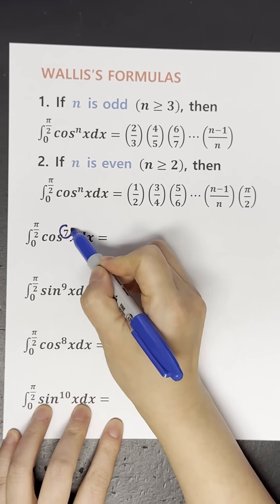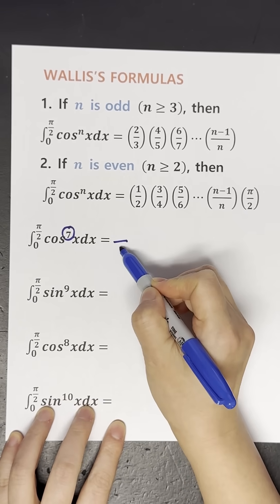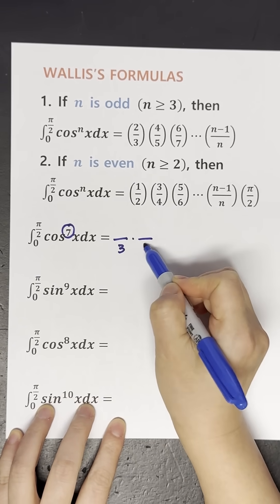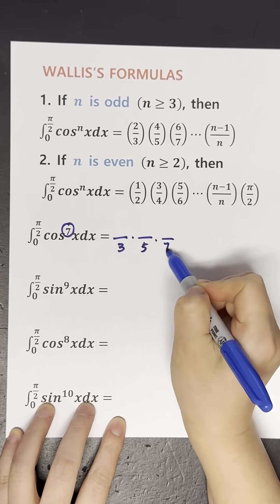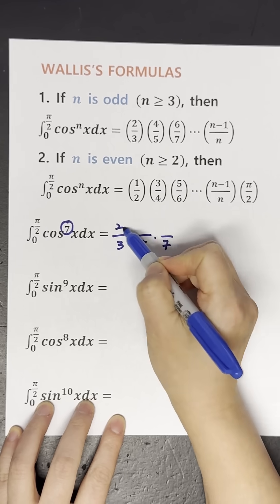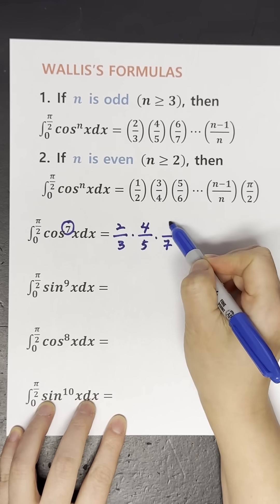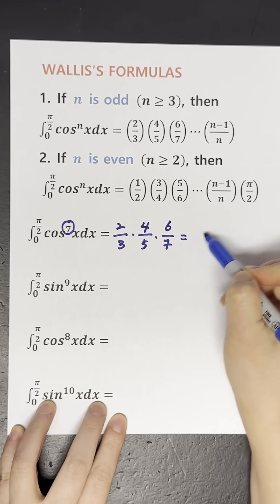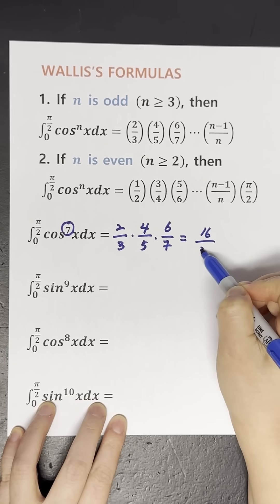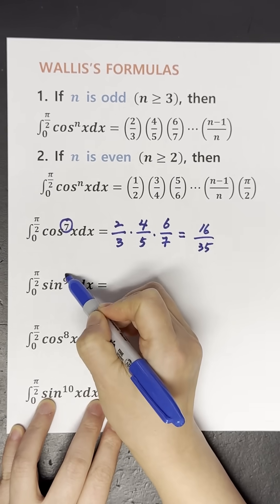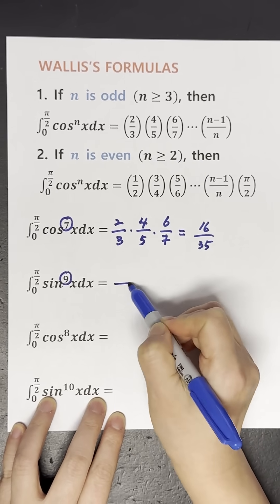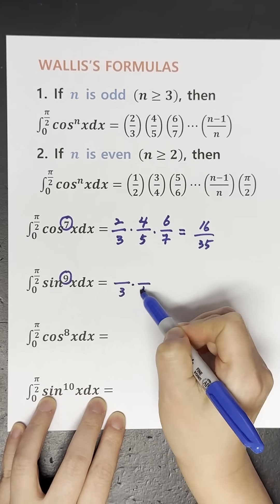Here, n is 7 — odd. And the answer is the same for when n equals 9.